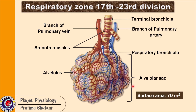The surface area of the respiratory zone is about 70 square meters. As gas exchange is taking place, there must be blood supply. The pulmonary artery ultimately branches to form capillaries, and this pulmonary artery will be rich in carbon dioxide. At the level of the alveoli, carbon dioxide will be taken up by the alveoli from this blood, and in turn blood will take up oxygen from the alveoli.